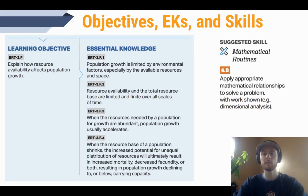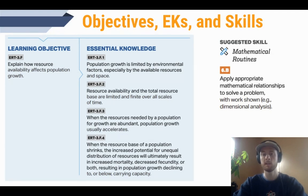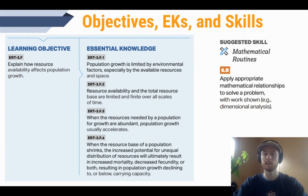Let's take a look at our objectives, essential knowledge, and our science practice for the day. Our objective today is to be able to explain how resource availability affects population growth. The first two essential knowledge points tell us that resources are always limited in an ecosystem, and that these limited resources like food and space will limit population growth. The third essential knowledge point is that population growth and carrying capacity can increase if those limiting resources increase.